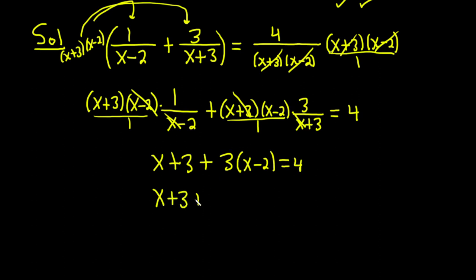And then we can distribute the 3 here. 3 times x is 3x. And then 3 times negative 2 is negative 6. And this is equal to 4.